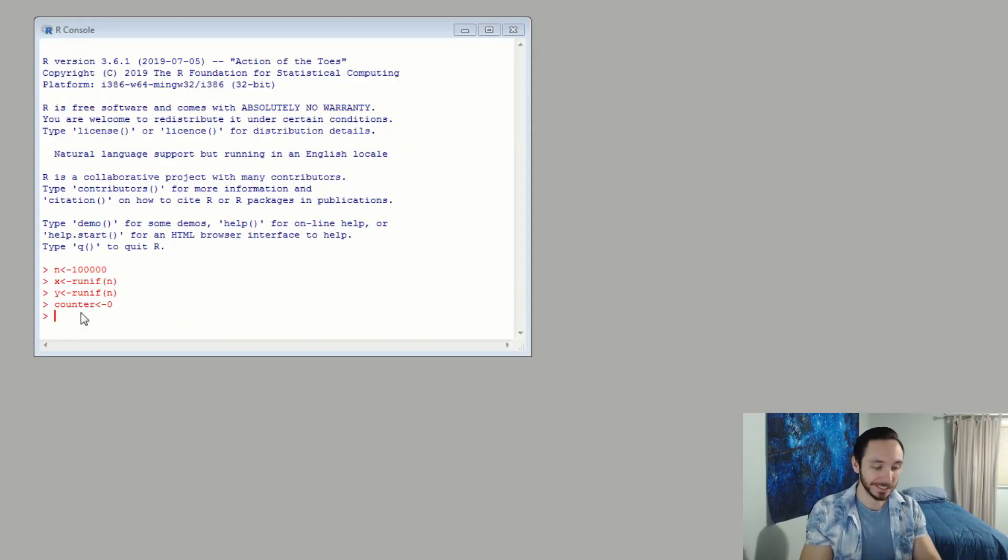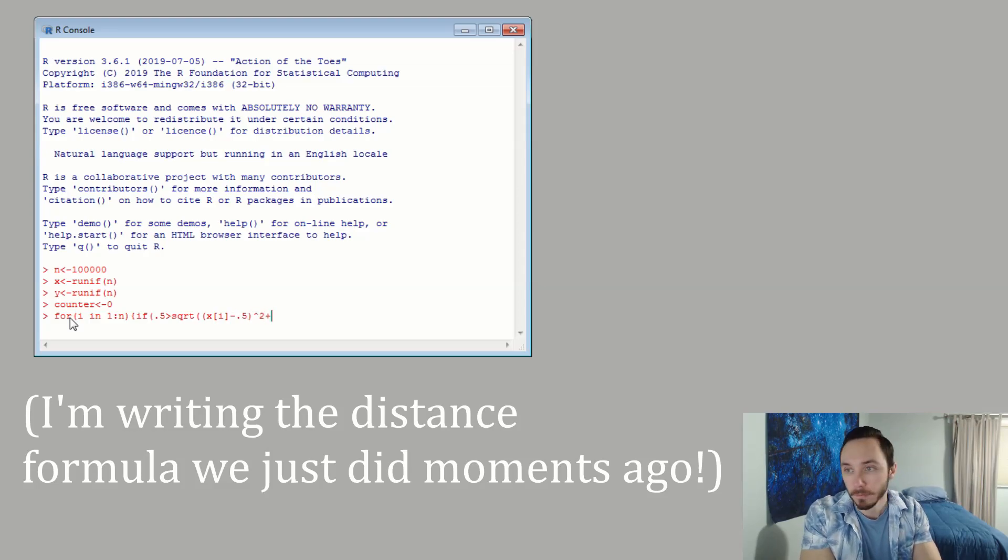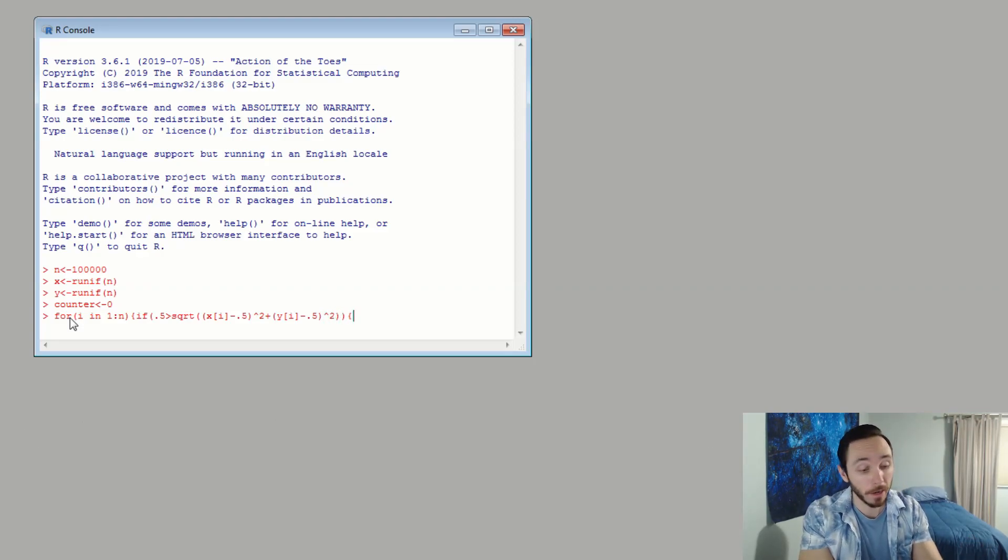This line of code is going to get a little bit more technical. The idea is we want to simply count how many darts are within the red circle, within 0.5 distance from the center. For every dart in the 100,000 darts, if we are within 0.5 distance away, we want to take our counter, which is initially 0, and add 1 to it and store it as that new number.